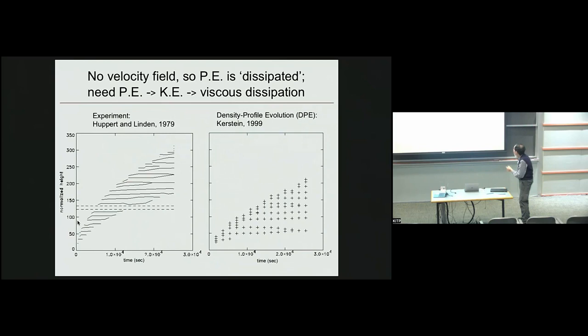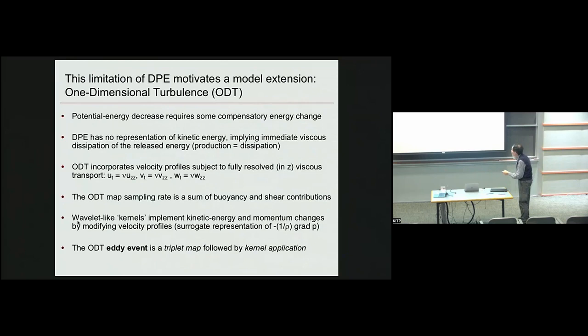What's wrong with this picture here? The density profile evolution, you could see these interfaces are more stable than they are in the experiment. What's missing? Well, when we release gravitational potential energy by doing one of these maps, where does it go? The default is it's being dissipated. The proof is gone. But that's not how the real world works. In fact, the potential energy really goes to kinetic energy, and then later it gets dissipated. That kinetic energy could then destabilize these things, but we don't have that here, so they're too stable.